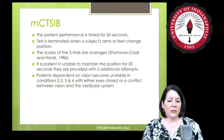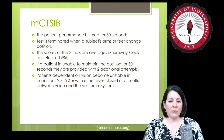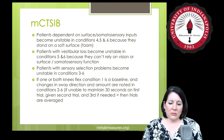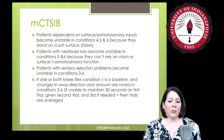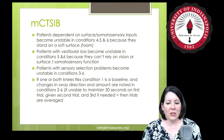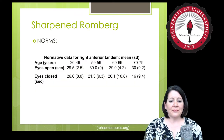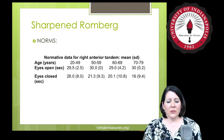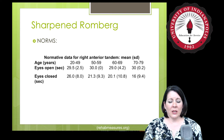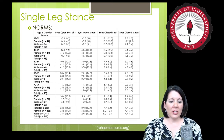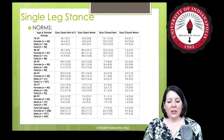Some additional information on results: if a person relies on their somatosensory inputs, you'll see that reflected in the Sensory Organization Test. Sharpened Romberg — feet in a line, arms folded, eyes open — has norms for different ages. We also have norms for single leg stance as a measure of balance. Notice how significantly a person's ability to stand on one leg decreases as they get older.